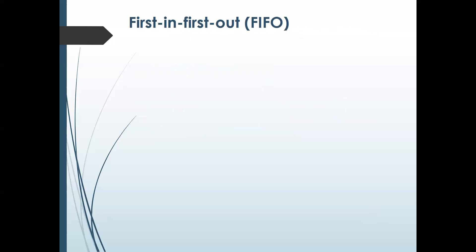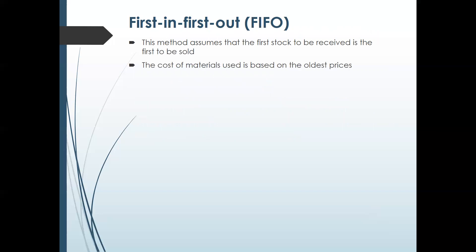First In First Out (FIFO): This method assumes that the first stock to be received is the first to be sold. Jo stock pehle purchase kia hai, jo pehle receive kia hai, woh pehle hi sale hoga. The cost of materials used is based on the oldest price. Closing stock is valued at the most recent price.